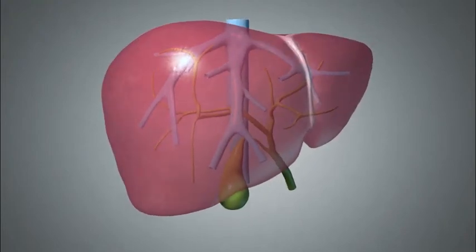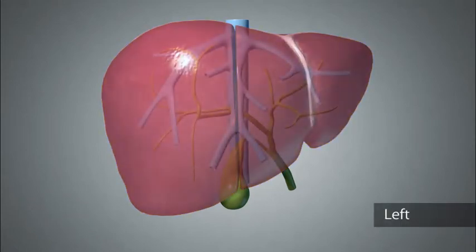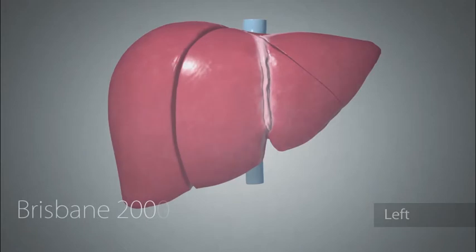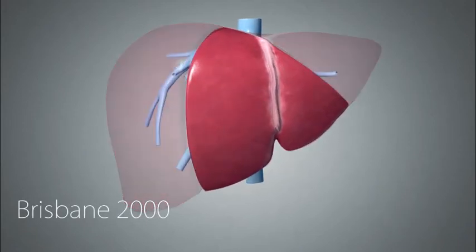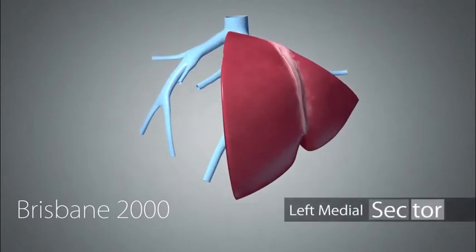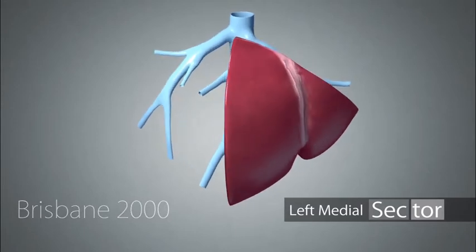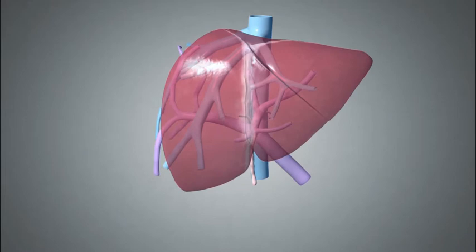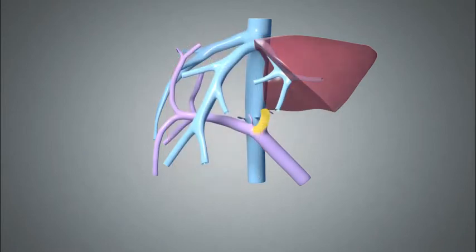The middle hepatic vein separates the right hemiliver from the left hemiliver and runs along the course of Cantlie's line. According to Brisbane 2000 terminology, the left medial sector is comprised of the liver parenchyma situated between the middle hepatic vein and the left hepatic vein. This area of liver includes the umbilical fissure, where the left portal vein runs, and thus a surgical resection of this area specifically is not possible without removing the entire left hemiliver.